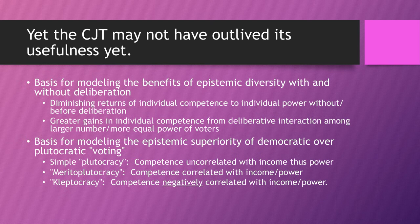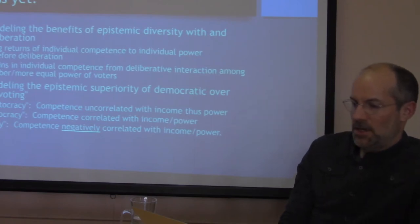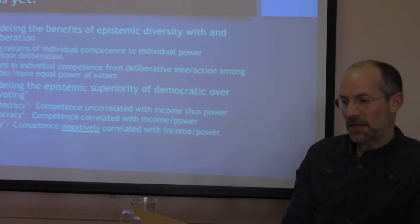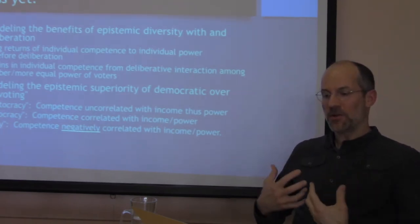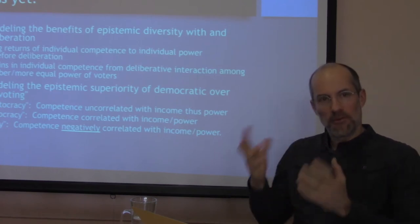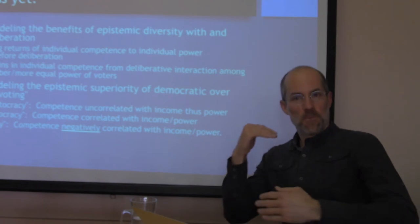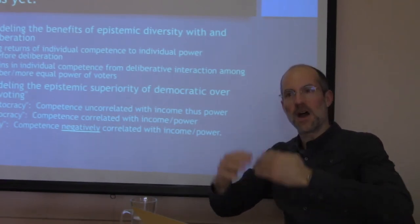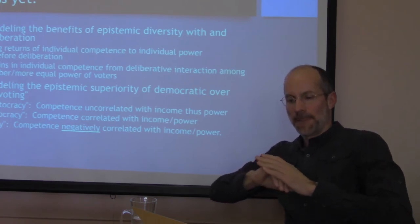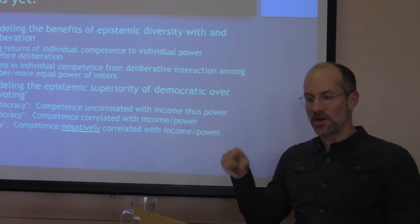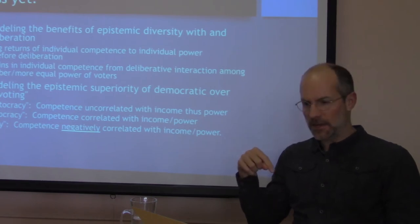She also emphasizes the value of majority rule as opposed to consensus, because majority rule is more honest about disagreement. With a consensus rule there's pressure for people to conform and pretend that all objections have been met when they haven't, which can impair the ability of the system to then revisit and revise. Yet the CJT may not have outlived its usefulness. I've begun with very simple simulations to model the benefits of epistemic diversity with and without deliberation. The basic ideas are that there are diminishing returns of individual competence to individual power before deliberation.